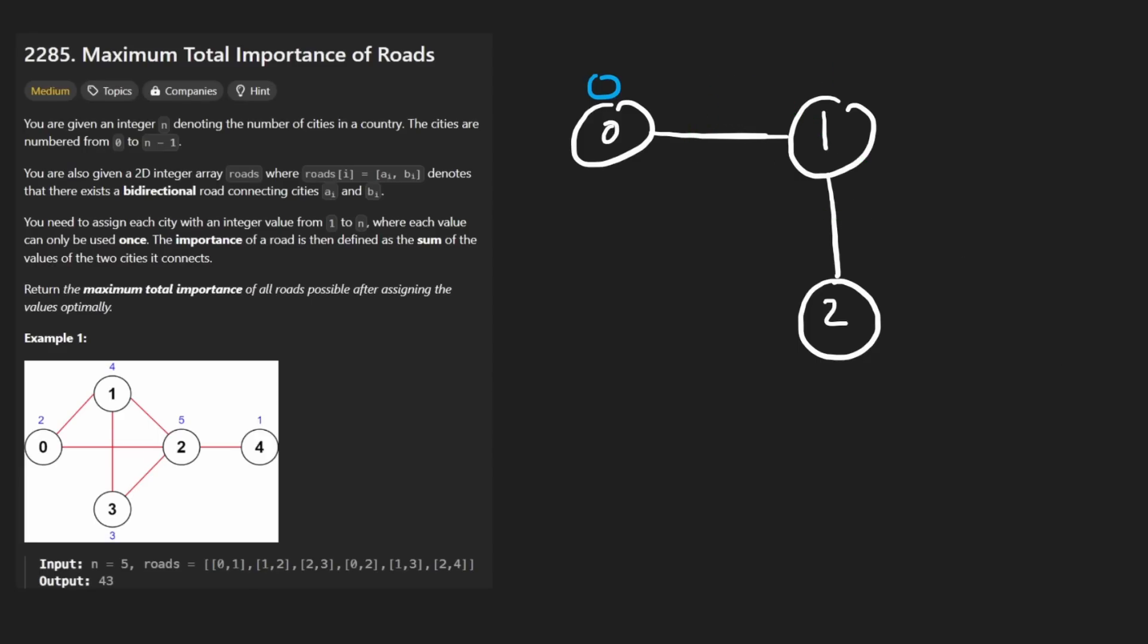Now, if I had done it slightly differently, if I had actually made this one 2 and this one 1, then here, for a sum, we would have gotten 2. And here, for a sum, we would have gotten 3. And then the result would have been 5. That's greater. So why was the result larger in this one?